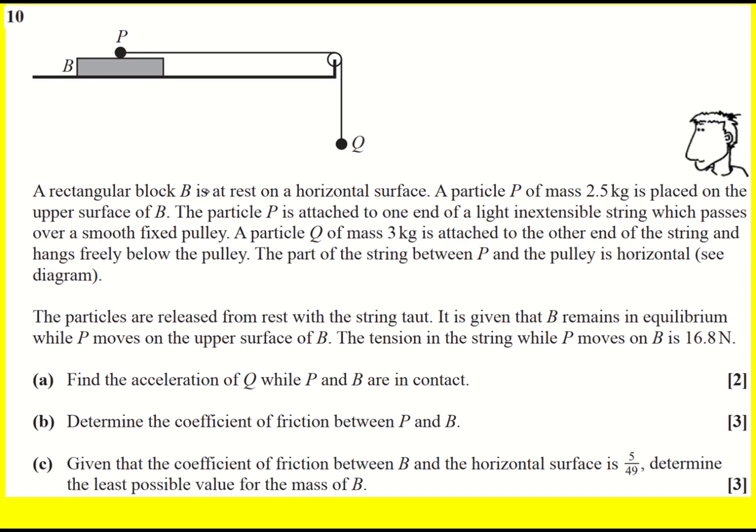I'm just going to read the question carefully. So we've got horizontal surface, P has a mass of 2.5 kilograms so I'll label these forces in blue and there will be a normal reaction from B that is acting up. We're not told at this stage whether there's any friction from B so I'll leave that off at the moment.